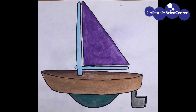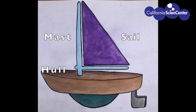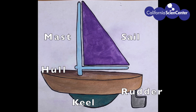The five major parts of our model boats are: the sail, which helps the boat move across the water; the mast, which holds the sail in place; the hull, which is used for all our storage; the keel, which is used for balance; and the rudder to control the direction of our boat. Think of these parts as you're designing your boat.